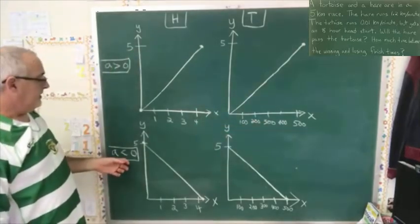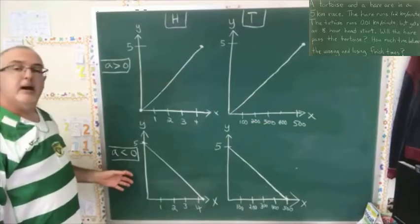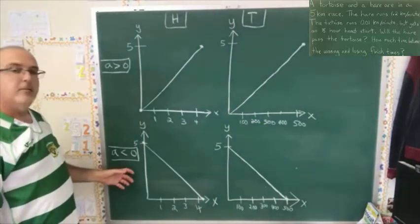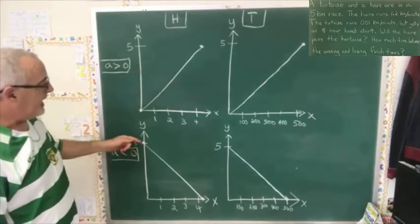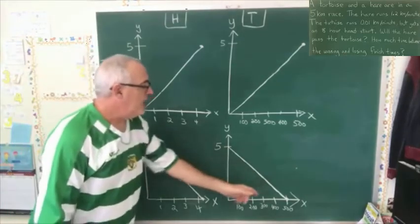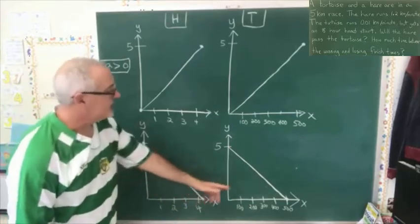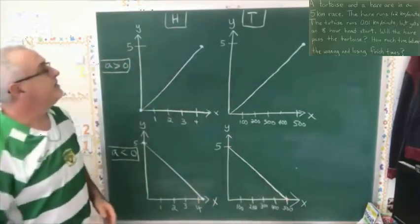If you have y defined as the number of kilometers left, then you have to do it like this. That means that your slope is negative, and you end up with this type of line where the zero gives us the answer to the question.